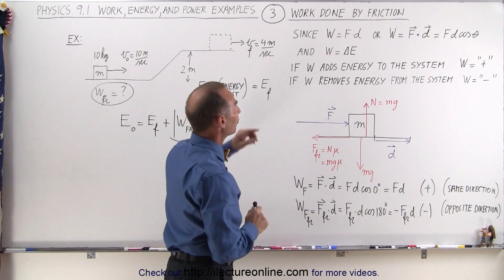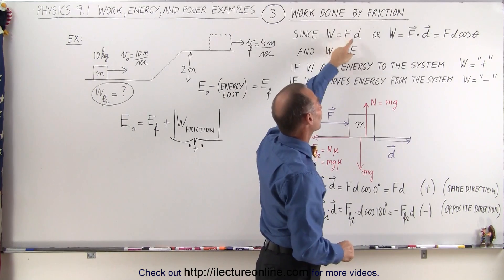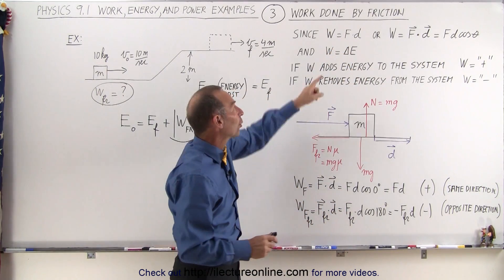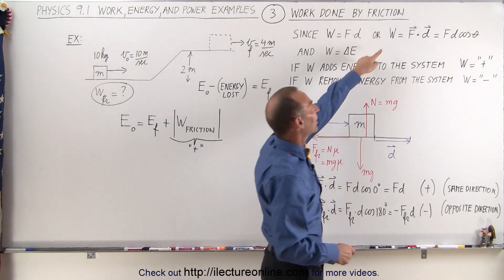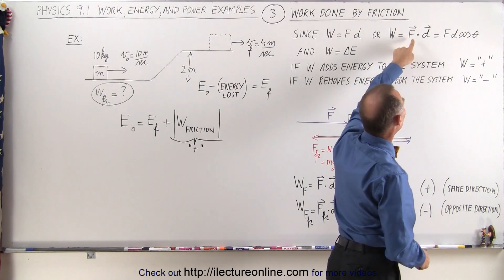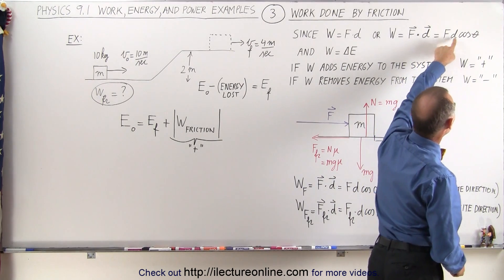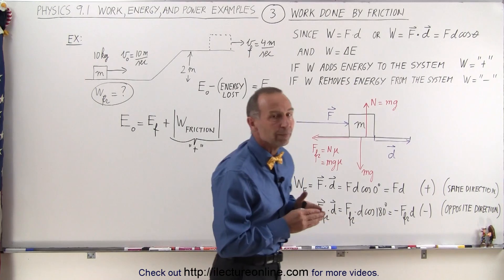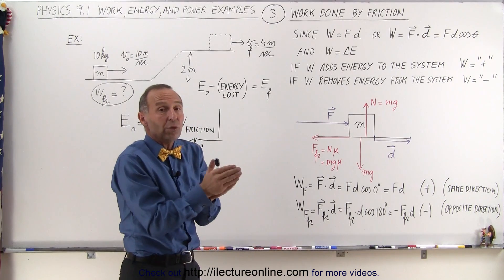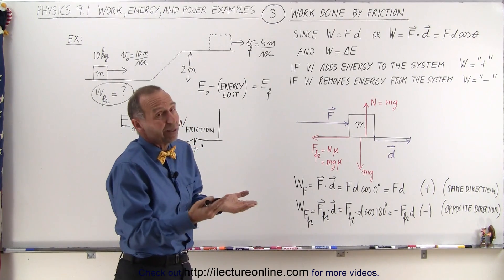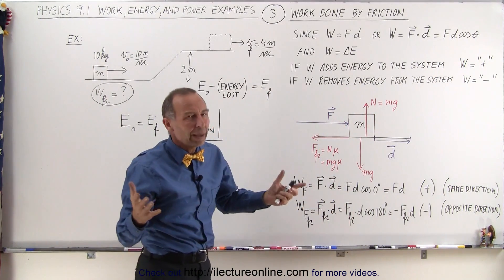First of all, we can define the work done as being a force times distance or force times displacement. We can also define work as a change in energy. If we want to use vector quantities, we define work as the dot product of force times displacement — the magnitude of the force times the magnitude of the displacement times the cosine of the angle between the two. Typically, when the force and displacement are in the same direction, the angle between them is zero, the cosine of zero is one, and we simply multiply the force times the distance covered.